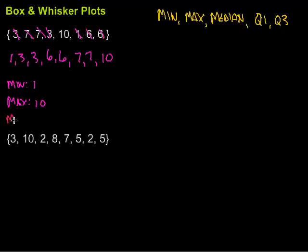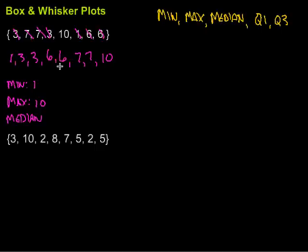Then I need to find the median. Remember, the median is the middle number when our set is in order. There are eight values in my data set, and the middle of my set falls right between these two sixes — four values smaller, four values larger. The average between the two sixes is still six, so the median is going to be six.